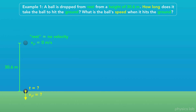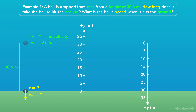Next, we always need to choose which directions are positive and negative. We could say up is the positive y direction, or down is the positive y direction. If up is positive, the initial y position would be 30.6 meters and the final y position at the ground would be 0 meters. If down is positive, the initial y position is 0 meters and the final y position is 30.6 meters.